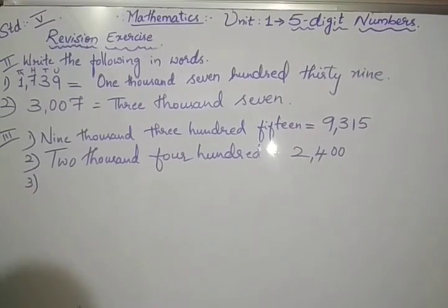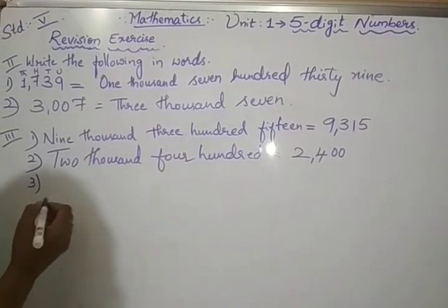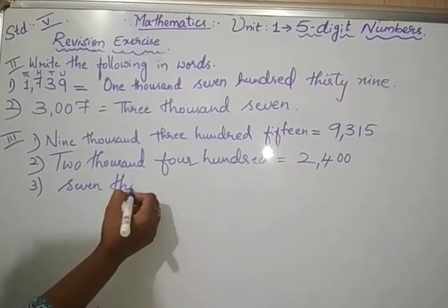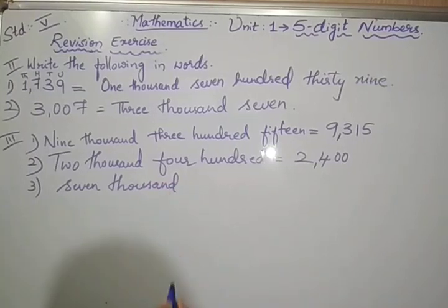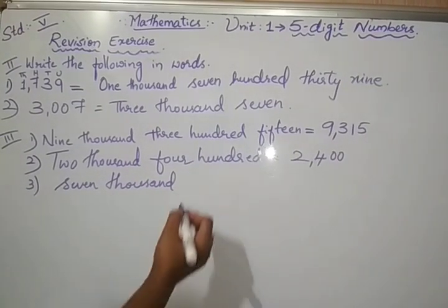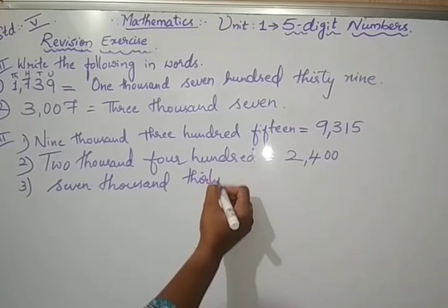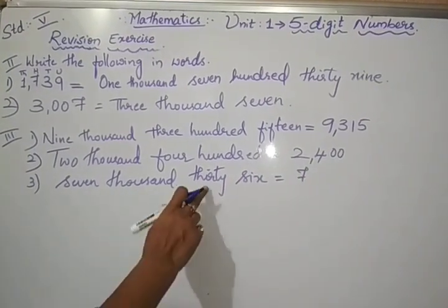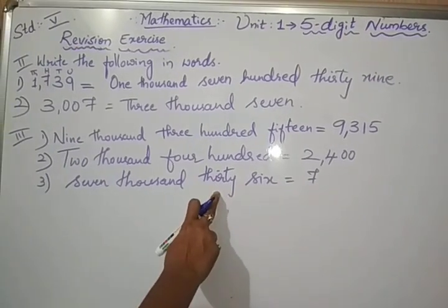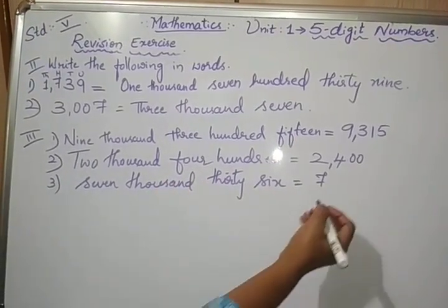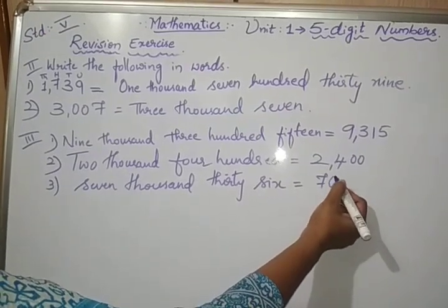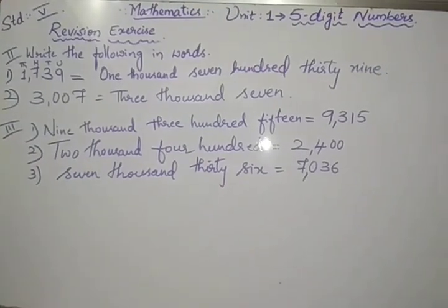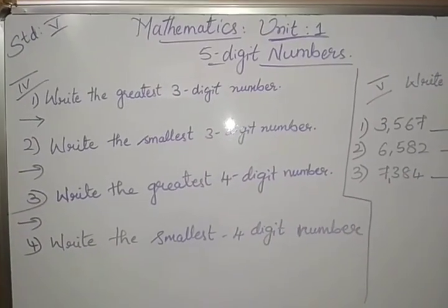Third one is 7,036. 7,000 and 36. 30 is in tens, 6 is in unit. No hundreds there, so write down 0, 36.